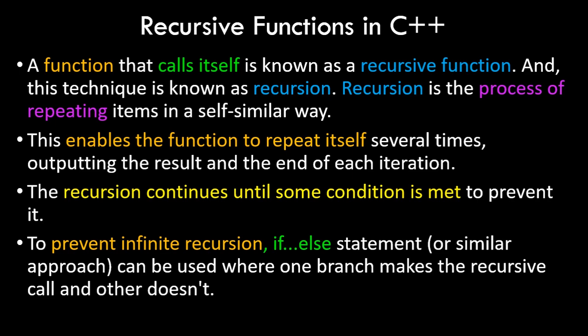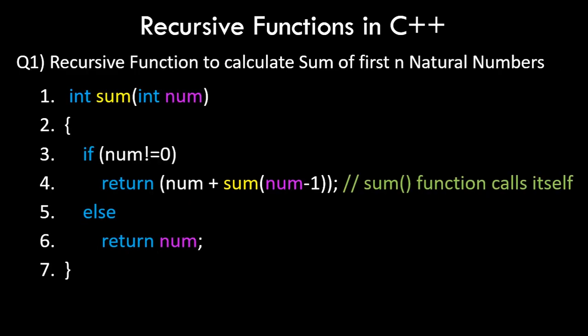Here's a basic example: a recursive function to calculate the sum of the first N natural numbers. Natural numbers start from one to infinity. If you want to calculate the sum of the first three natural numbers — one, two, and three — the sum should be six. You can see the function signature on line one: return type is int, the function name is sum, and it takes one integer value as the upper limit.